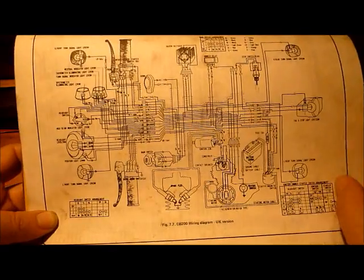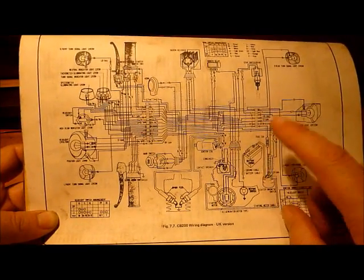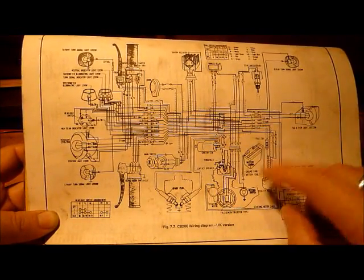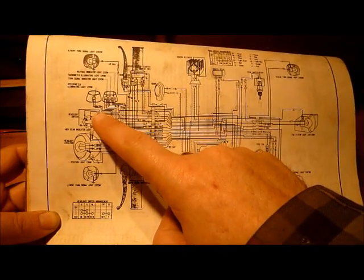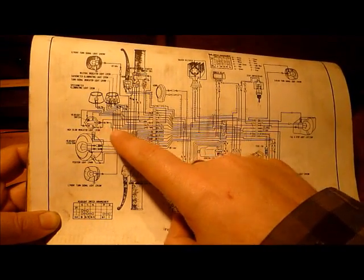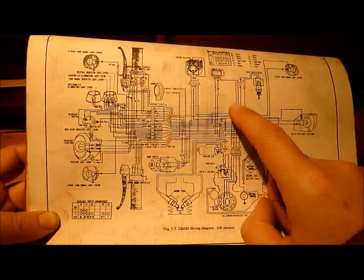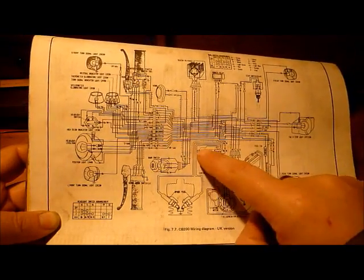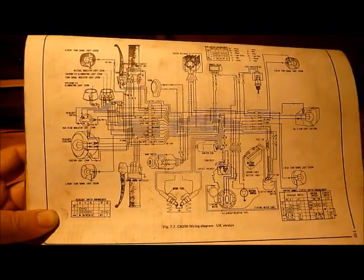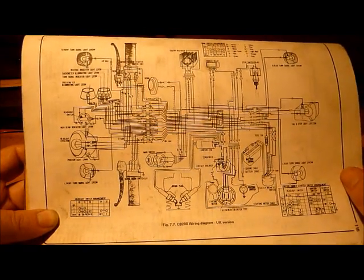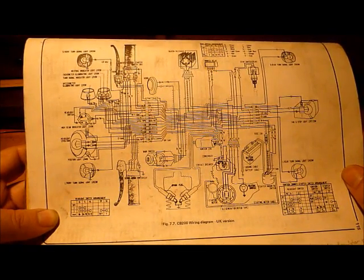If anyone knows where there is an online version of the circuit diagram for the UK version of the motorbike with the light switch shown and with the regulator so I can work out how it fits into the system, I'd really appreciate a comment in the video at the bottom.